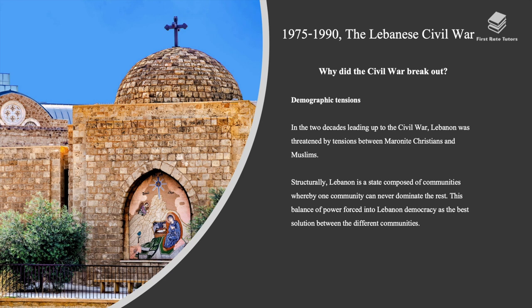Between 1975 and 1990, a civil war broke out in Lebanon. One key cause was demographic tensions. In the two decades leading up to the civil war, Lebanon was threatened by tensions between Maronite Christians and Muslims. Structurally, Lebanon is a state composed of communities where no one community can dominate the rest. This balance of power forced Lebanon into a democracy as the best solution between the different communities.